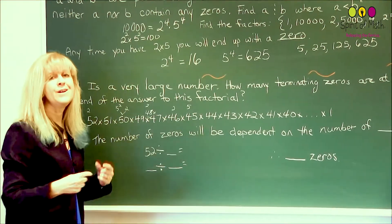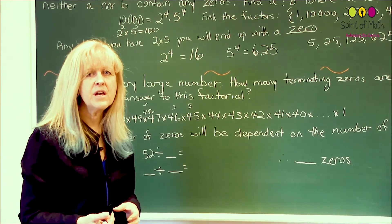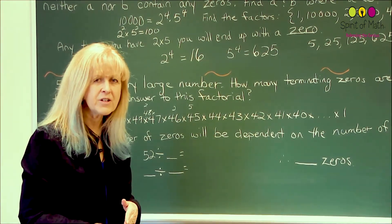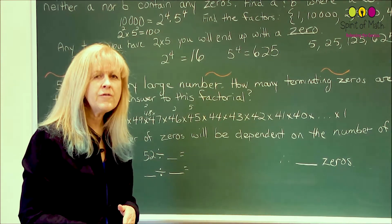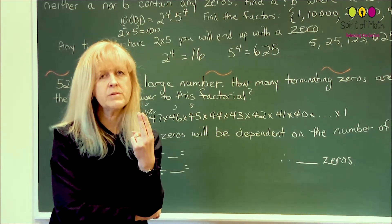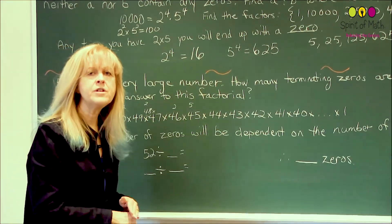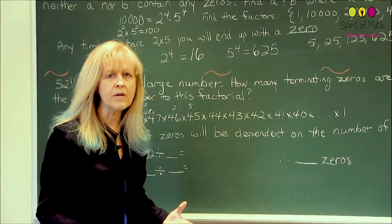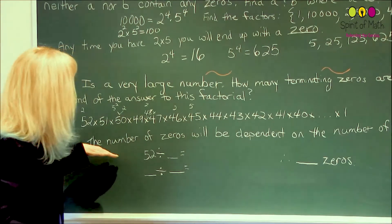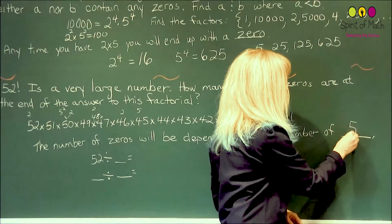5 times 3 squared is in that 45. So basically what I'm showing you here is that there's lots of numbers that have a 2 as one of its factors, but there are fewer numbers that have a 5 as a factor. So really, if you want to find out how many pairs of 2 times 5 there are in here, what you have to do is look for the number of 5s that you could prime factor out. So the number of 0s will be dependent on the number of 5s.